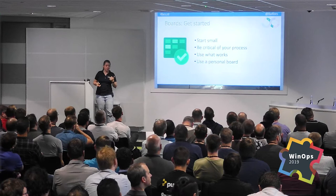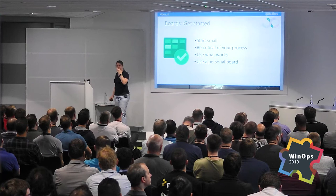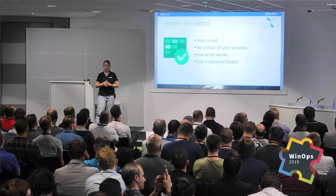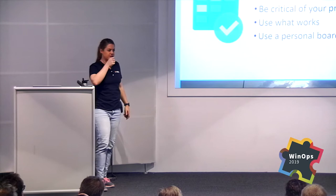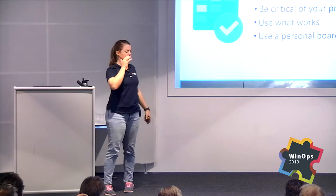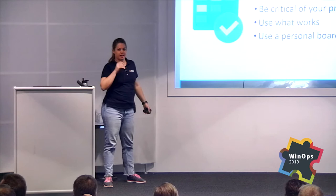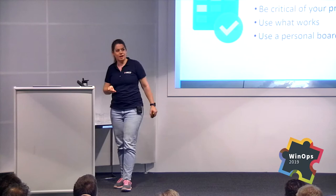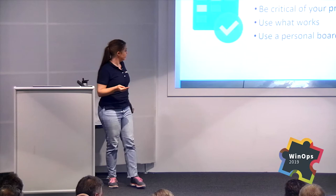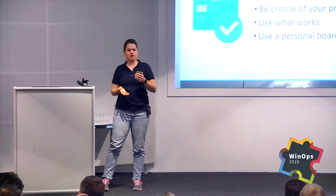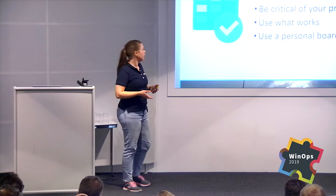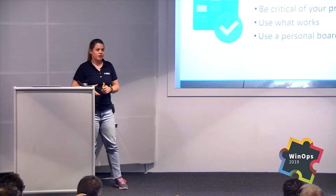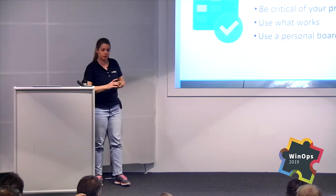This is an example of how you can use the boards. If you're interested, start small — you don't have to make use of every solution available. Be critical of how it works, try something out and discuss with your team. If it's not working, change it. Don't think you should work a certain way just because Agile says so — work how it works for you. And start with a personal board, really — it makes personal life so much easier to keep track of everything.